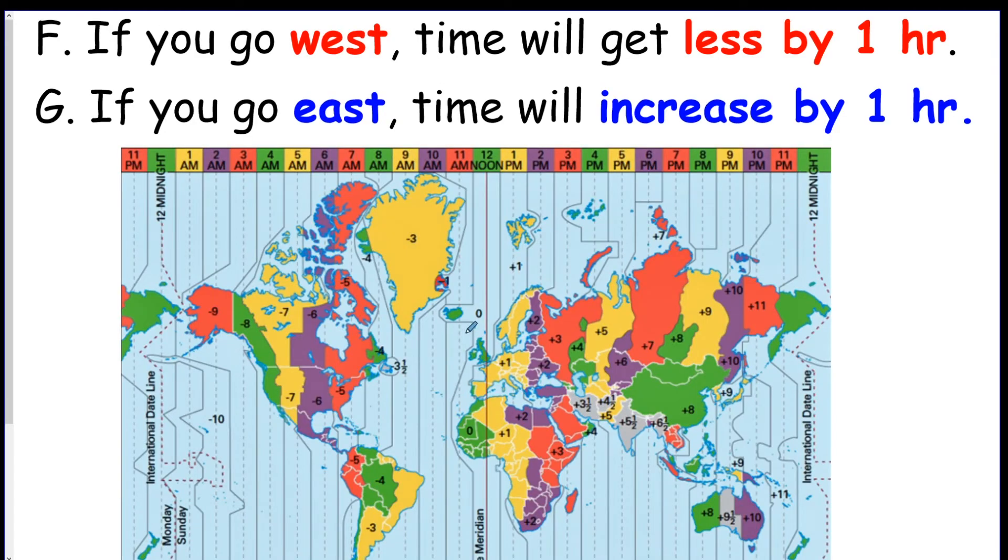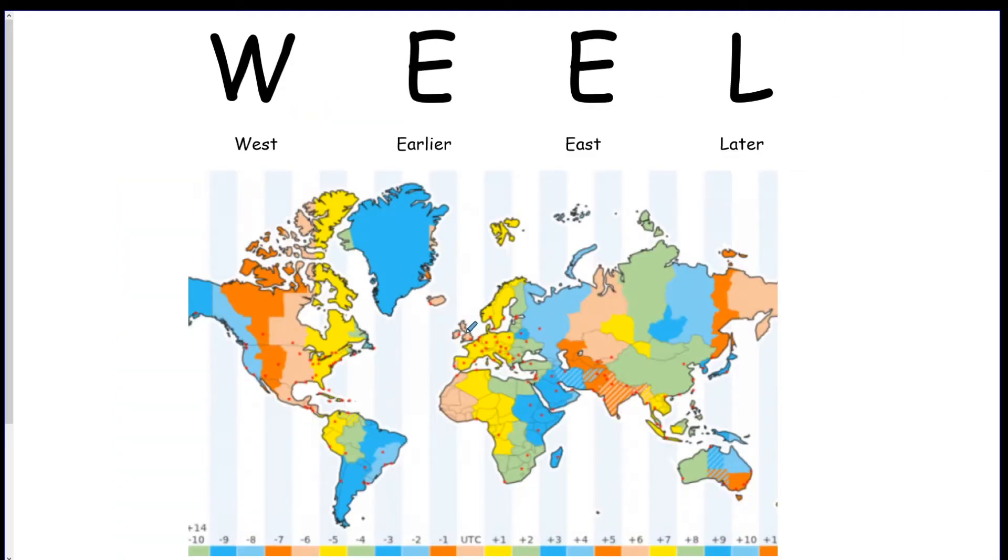So this is a little trick to remember. If you go west, time will get less. As you go east, time will increase. And it's always by one hour, and it's always every 15 degrees. This is another little trick. Wheel west earlier, east later. As you go west, the time gets earlier. As you go east, the time gets later.